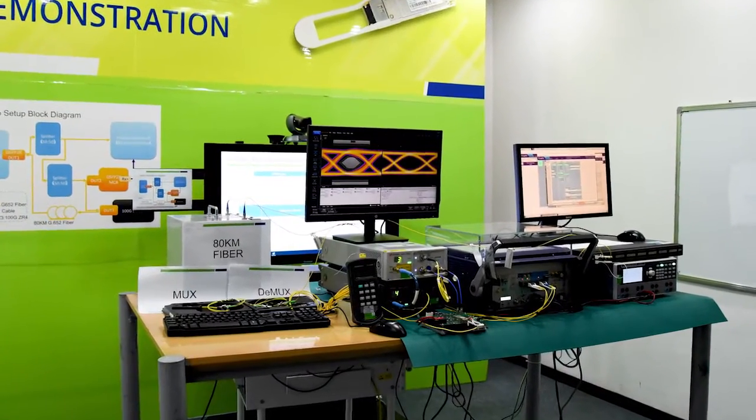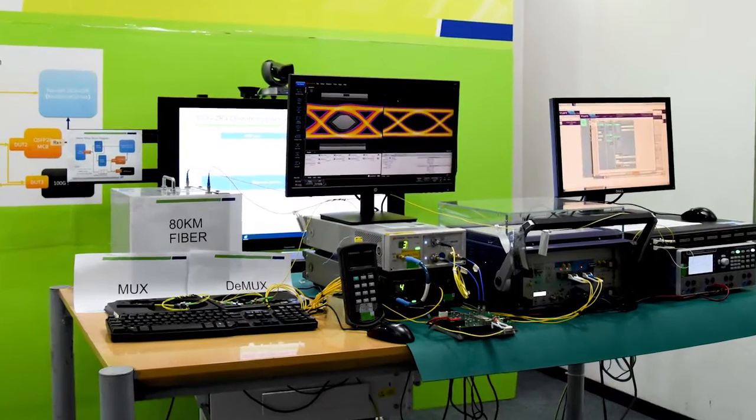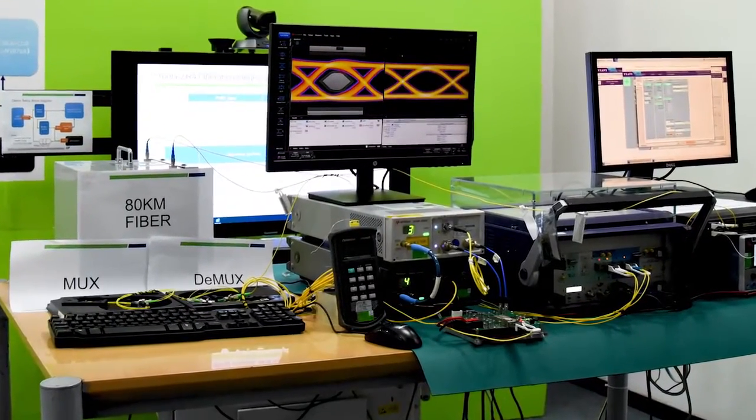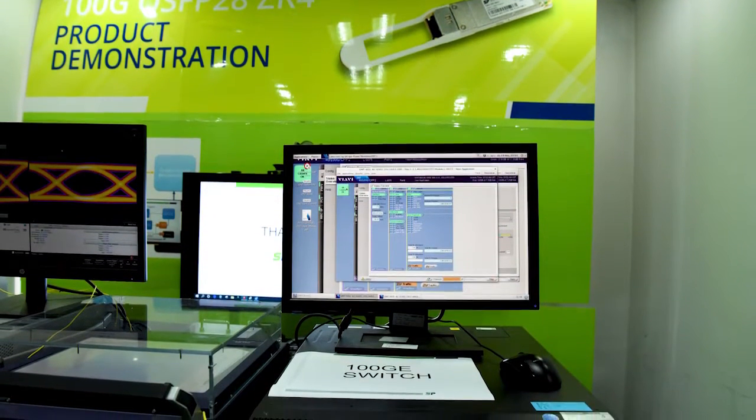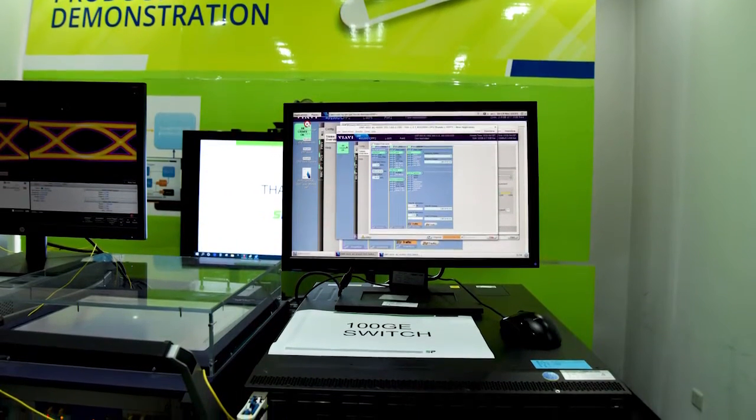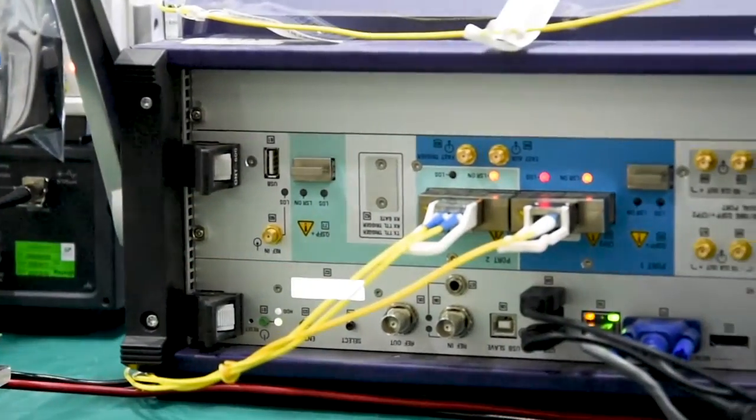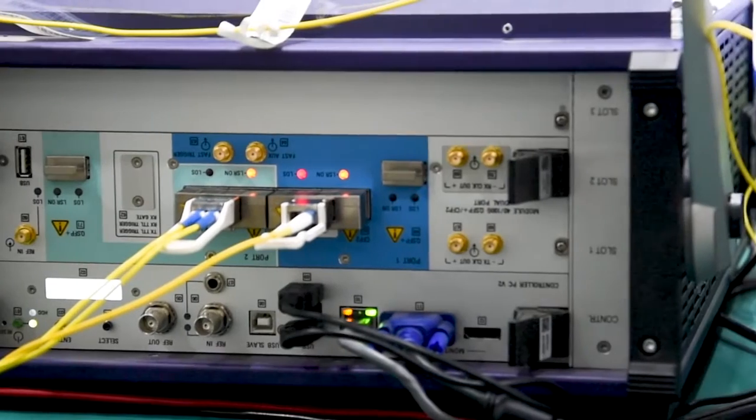In this demonstration, we are using our 100GB QSFP28 ZR4 transceiver running 100GB per second live traffic over 80km single mode fiber. The live 100GB traffic is generated by a VIAVI ONT603 tester to generate 4x25GB NRZ data stream driving the 100GB ZR4 module. The generated ZR4 optical signal was first split by a 50-50 3dB splitter into two directions.